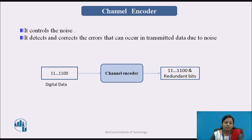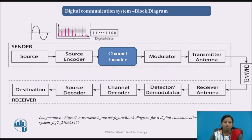The next block is the channel encoder. It controls noise by detecting and correcting errors that can occur in transmitted data. The basic function of the channel encoder is to introduce redundant bits into the input digital data, which are used to detect and correct errors at the receiver side in the channel decoder. The output of the channel encoder is the data bits plus redundant bits.